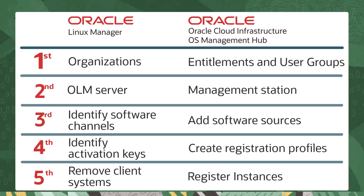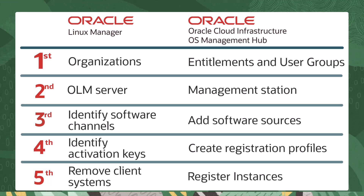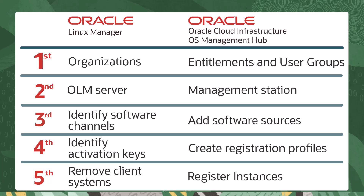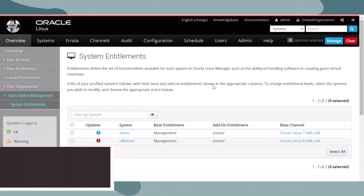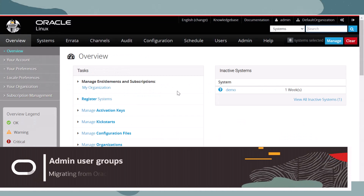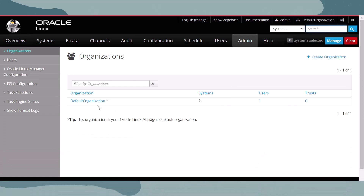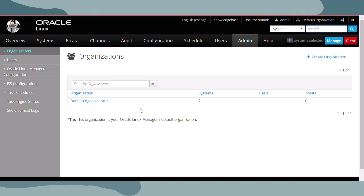Organizations as entitlements and user groups. Oracle Linux Manager servers as management stations. Collecting software channels and adding them as software sources. Identifying activation keys and creating corresponding registration profiles. Removing client systems and registering them as instances. In Oracle Linux Manager, the organization's feature defines sets of managed systems, administrators, and software entitlements. This feature is separated out into its components in OS Management Hub.